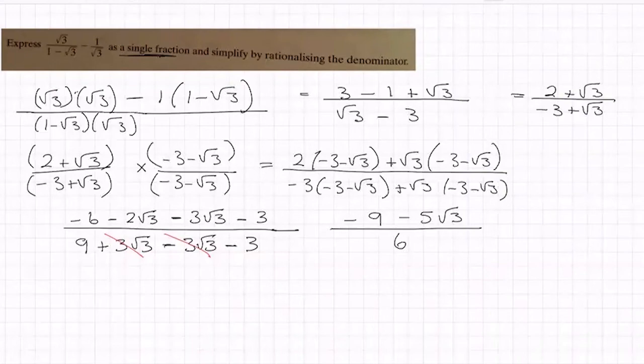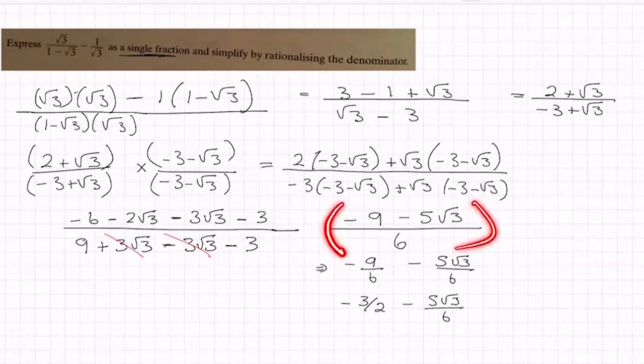That is a perfectly acceptable answer. I could write it as minus 9 over 6 minus 5√3 over 6. And this bit here would cancel down a little bit if you want it. I'm dividing top and bottom by 3, minus 5√3 over 6. There's not much I can do to that second part. So you can do that if you wish, or I think it's perfectly acceptable to leave your answer as what I'm showing you here.